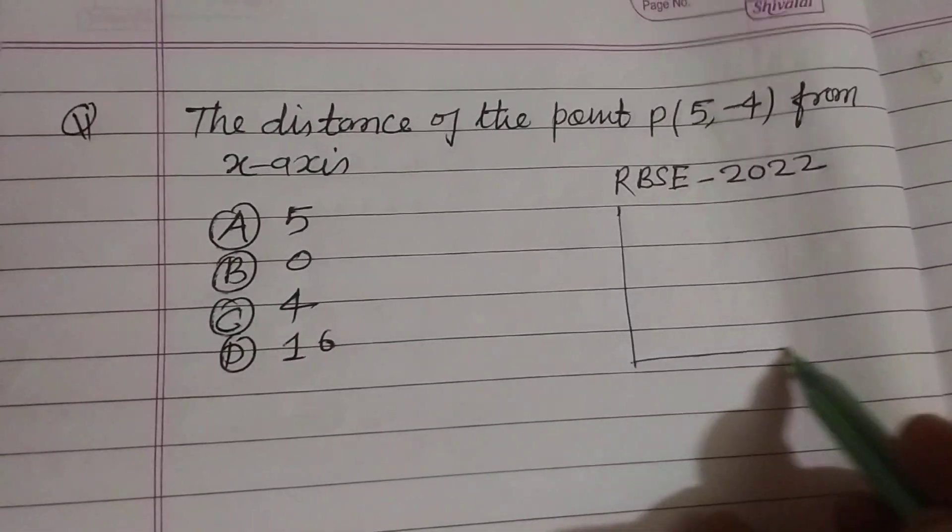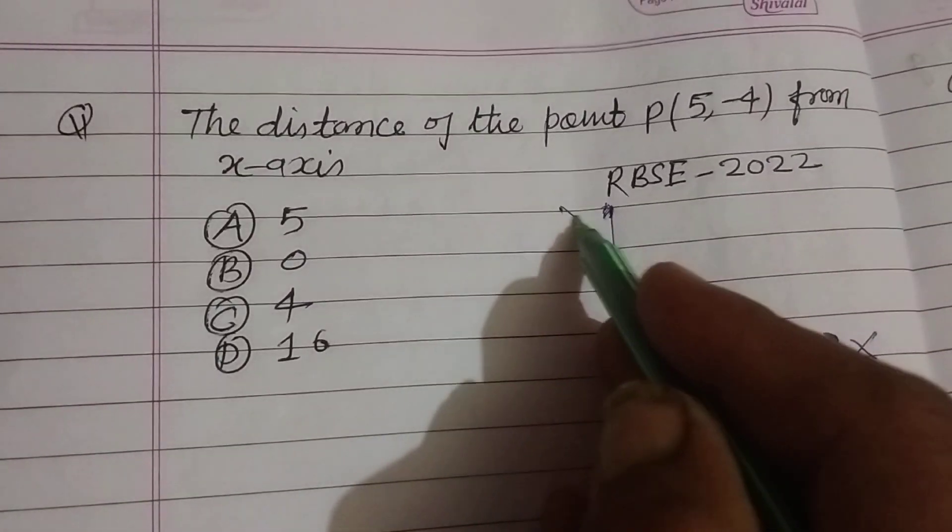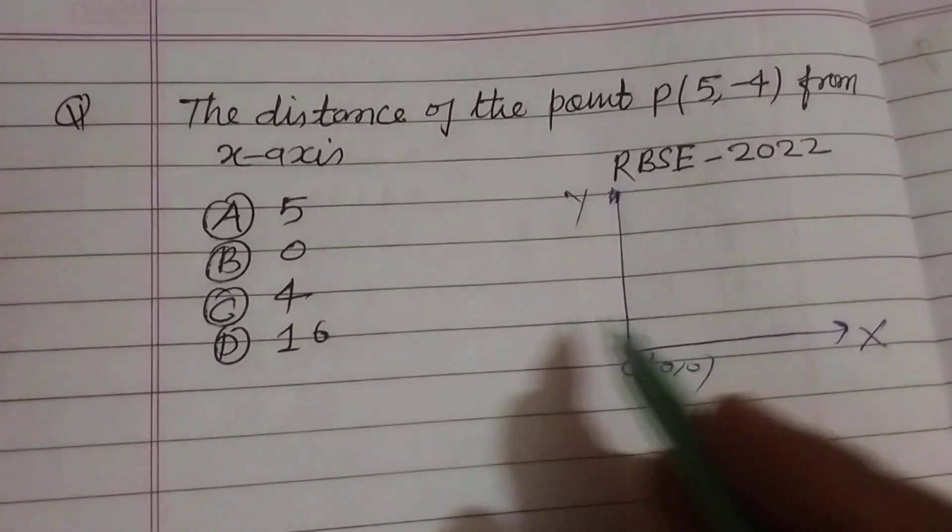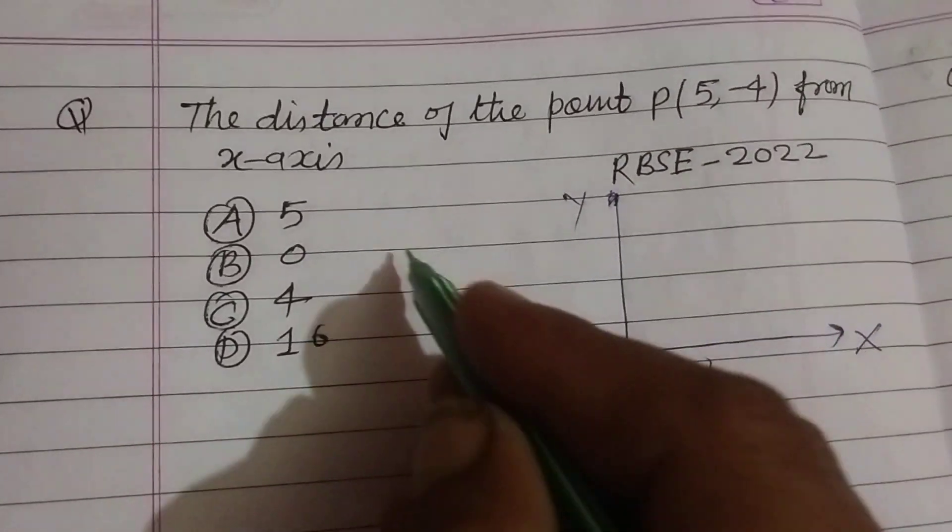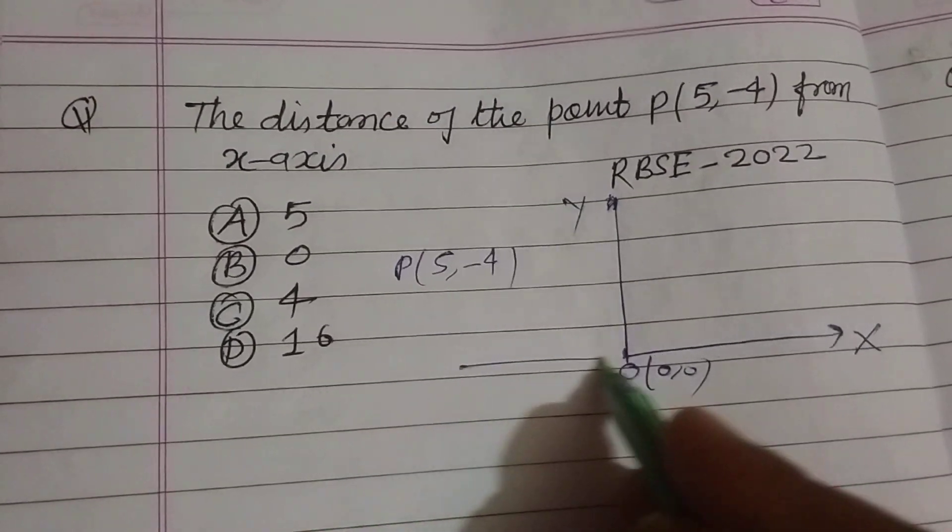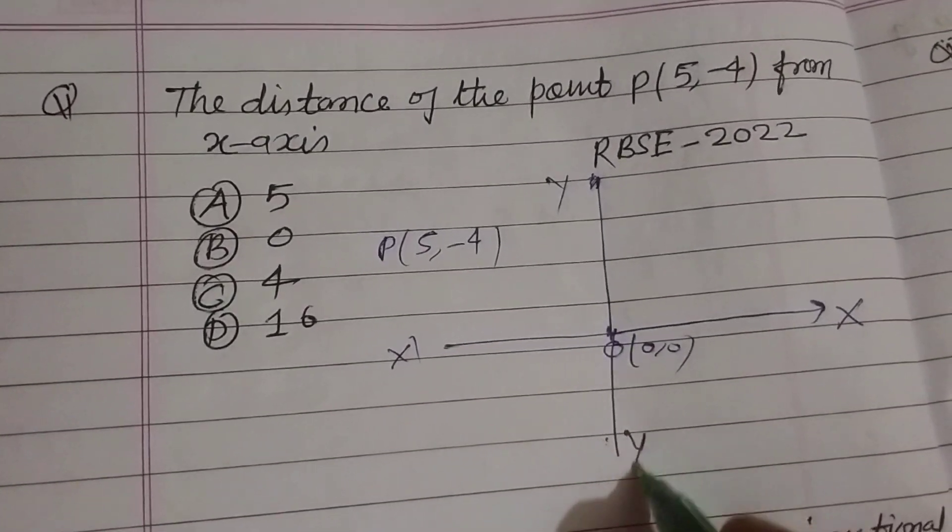First we draw this point or locate this point on the Cartesian plane. This is the origin point (0, 0) and point is P. So x-axis and this is y-axis.